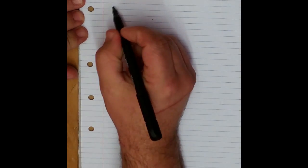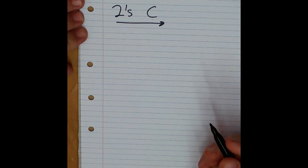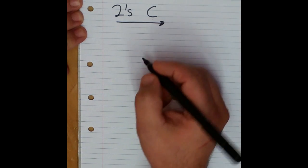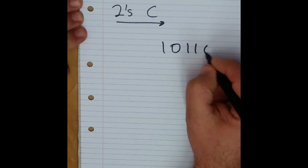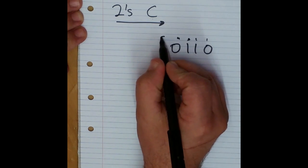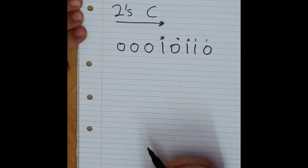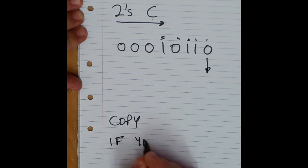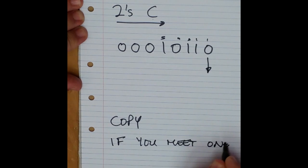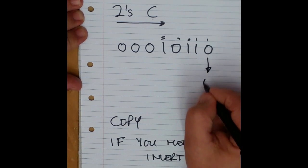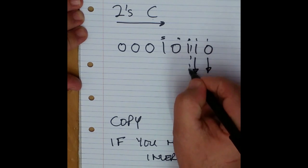The last trick I want to show you is two's complement. You can do this a number of ways — the way you've probably learned is to take a binary number, invert it, and add one. But there's a quicker way. Let's take a simple binary number: 1 0 1 1 0. How many bits am I working with? For microprocessors we're normally working with eight bits, so pad it up with extra zeros. Then start with the rightmost digit — the rule is: copy until you meet a one, then invert what follows.